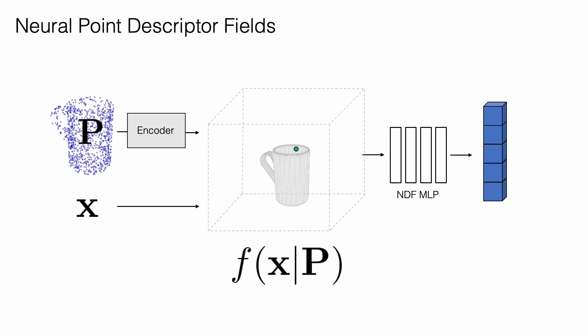We first propose our neural point descriptor field, which is a continuous function parameterized as a neural network that takes as input a 3D point x and a point cloud p and outputs a descriptor value. This descriptor varies depending on the 3D location of x, and encodes information about the spatial relationship of x to the geometric features of the object. Watch as the output color changes depending on the 3D location of the green point.